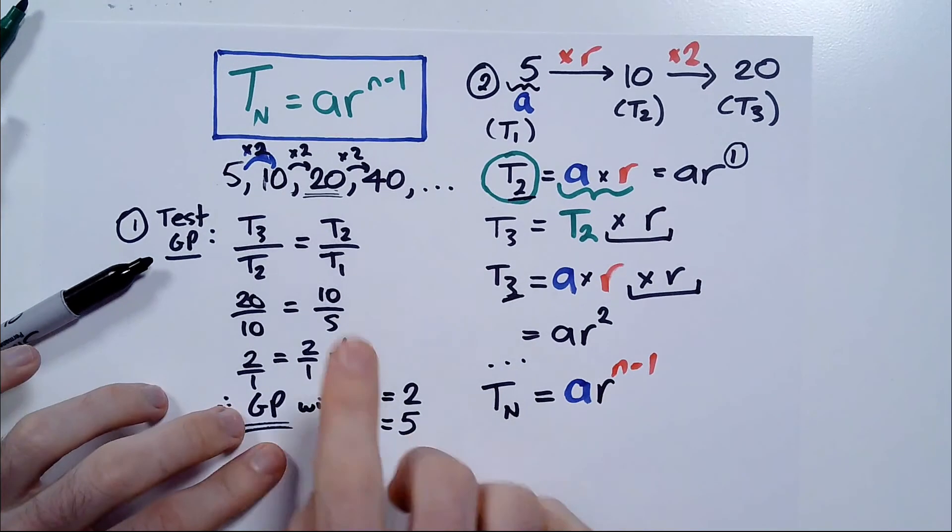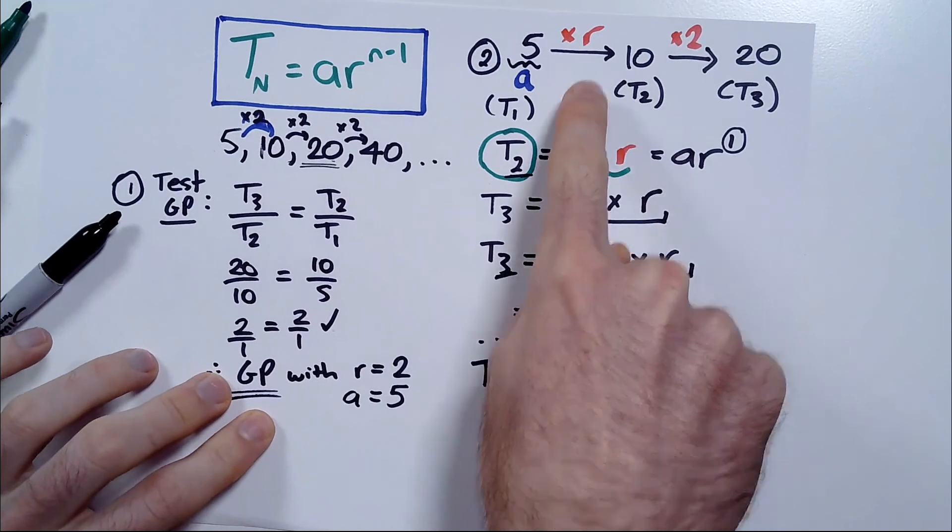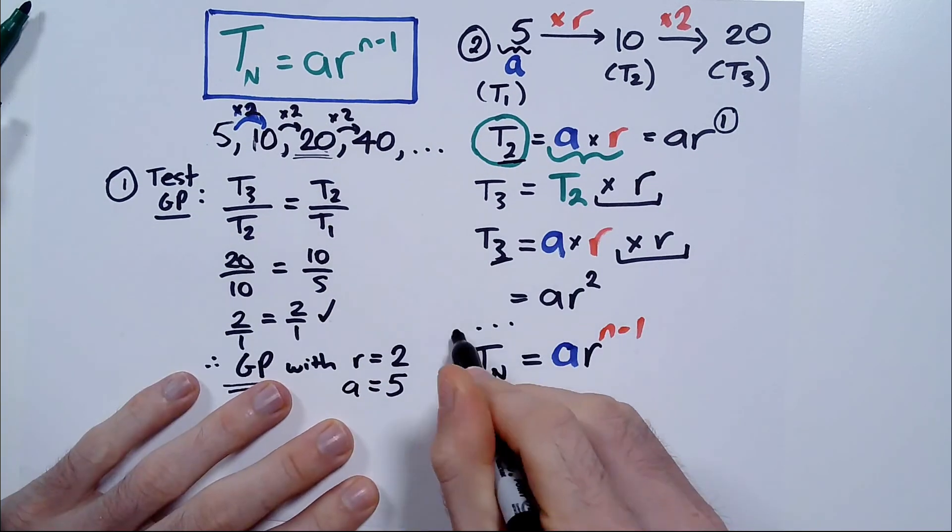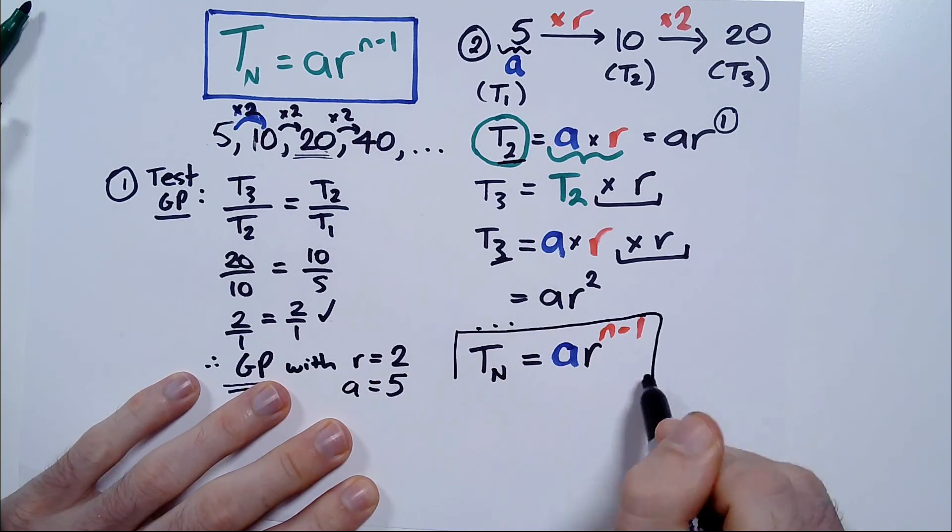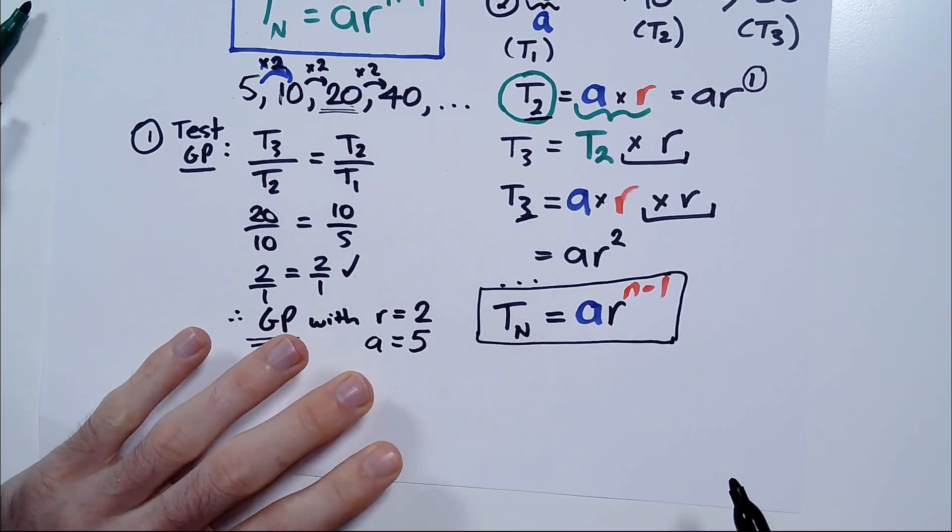So, you see here, it follows a pattern where the power is 1 less than the number of the term you're trying to find. So, if you're trying to find T10, it's AR to the 9. And that is how you get this formula. Now, you can memorize this formula, it's just good to understand where that formula comes from. It comes from this pattern, because then we can put it into this general formula here. And now, we could find any term we want.